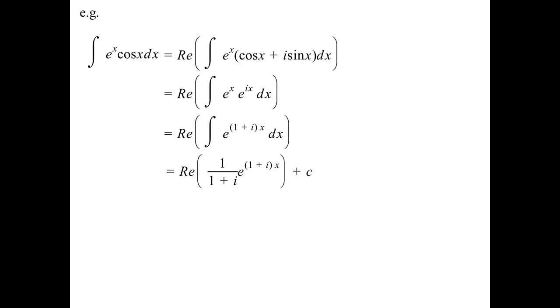So let's break it up into the real and imaginary. Well, the reciprocal of this is 1 minus i over 2. Well, 2 is a real number. So I can pull that out. I can't pull the 1 minus i out yet because that's not real. I can only pull out real numbers. So let's see what is 1 minus i times e to the 1 plus i x.